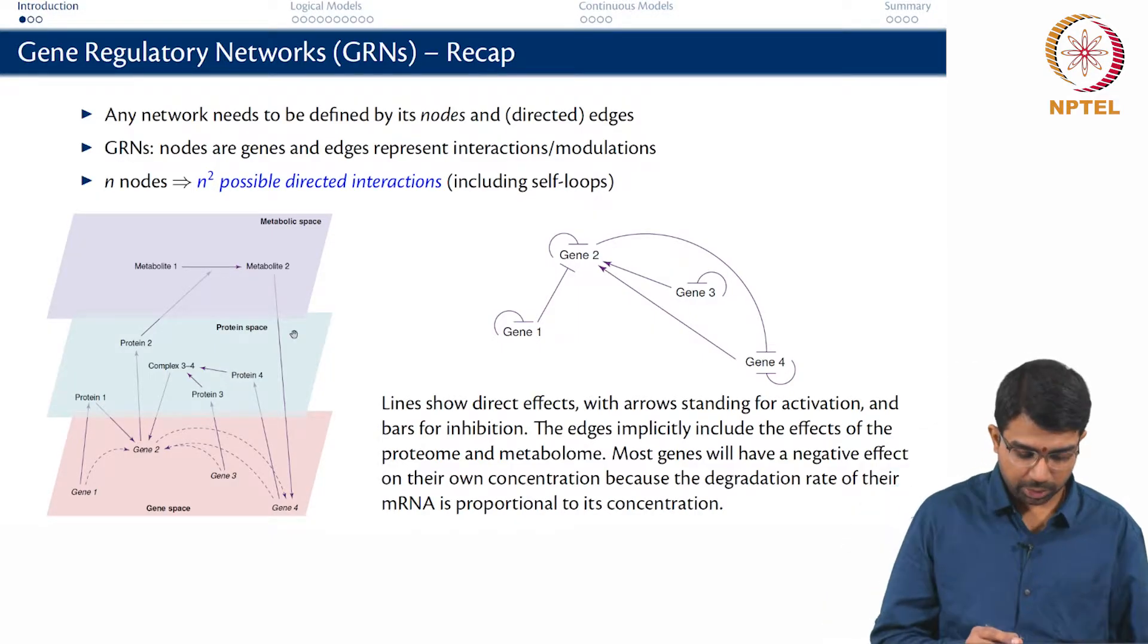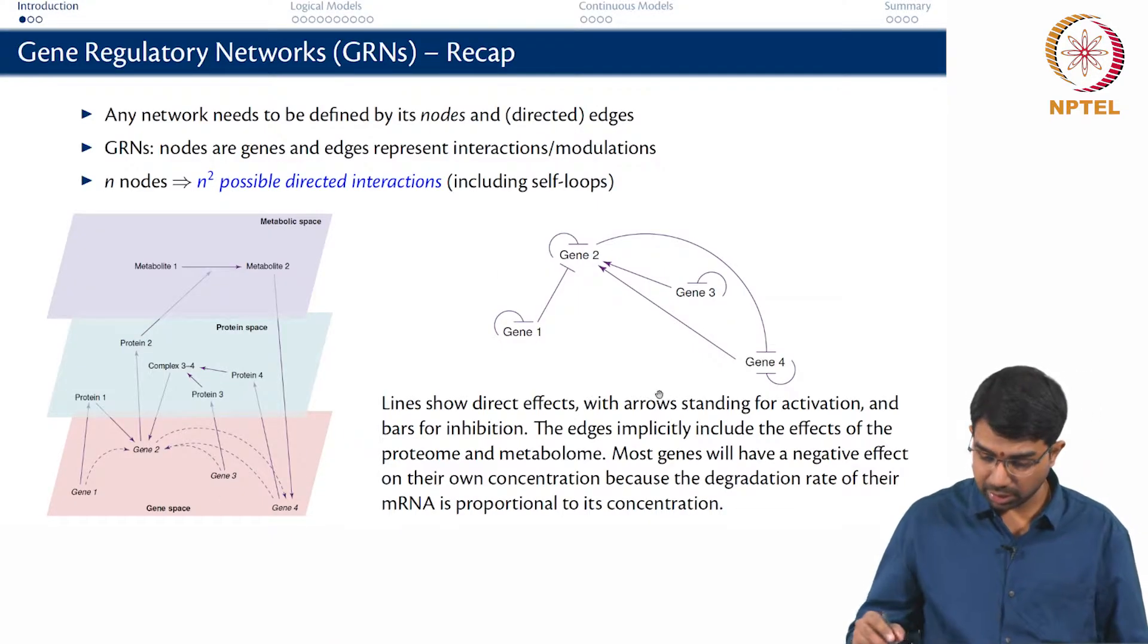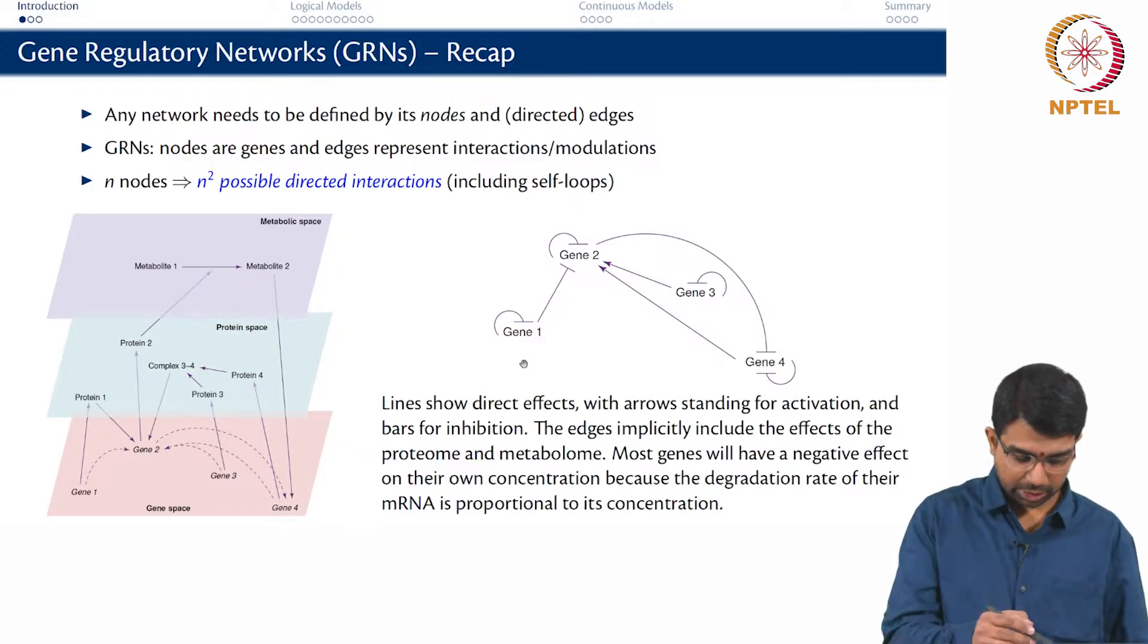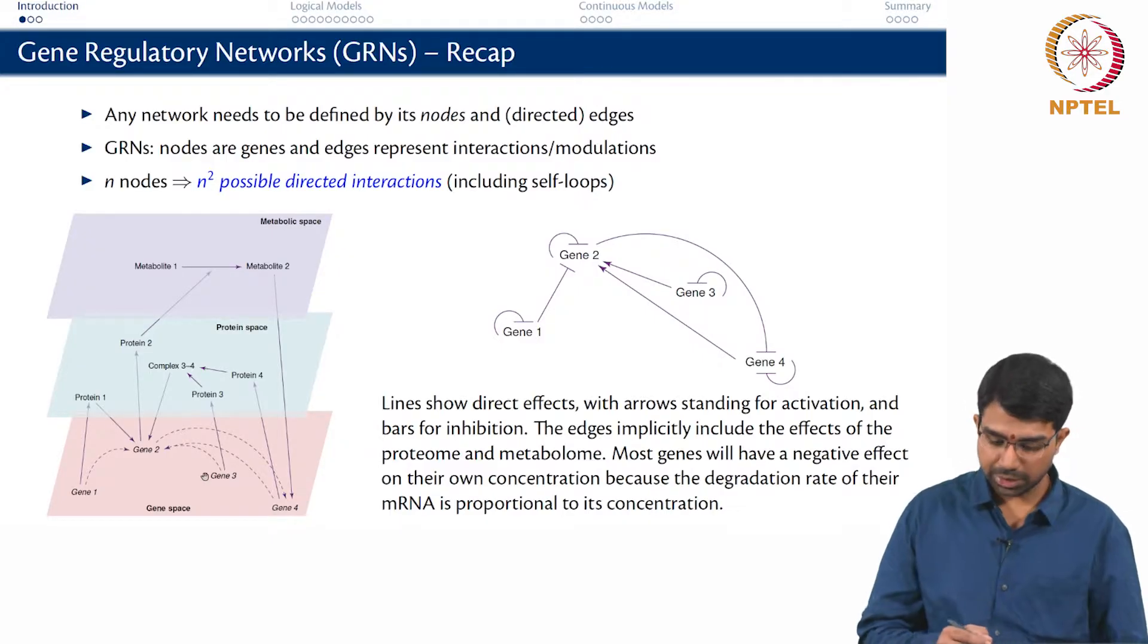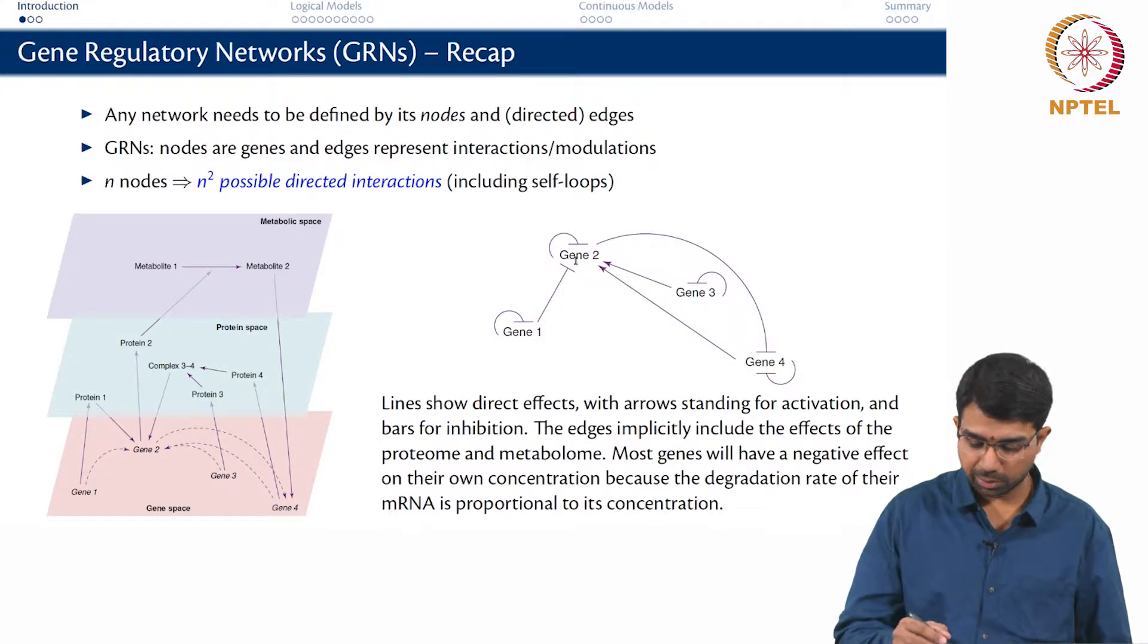So this is how a gene regulatory network is usually derived. You have some interactions happening in the metabolic space, some interactions happening in the protein space. So you have a protein that complexes with another protein and then acts as a transcription factor for another gene. Finally this is how the gene regulatory network looks like if you project all the interactions to the gene space. Gene 1 inhibits gene 2, gene 2 inhibits gene 4, gene 4 and gene 3 activate gene 2 and so on.